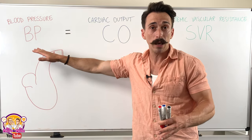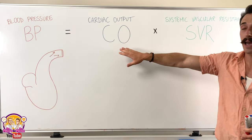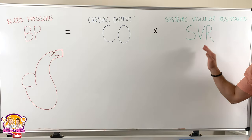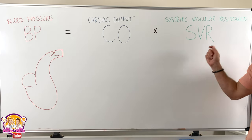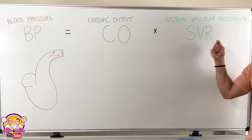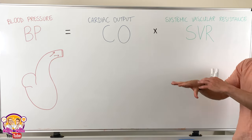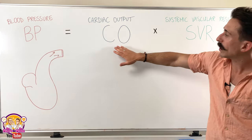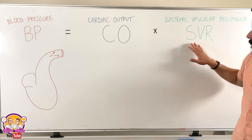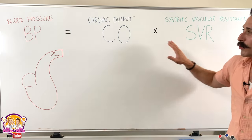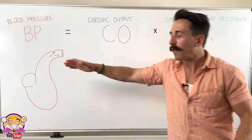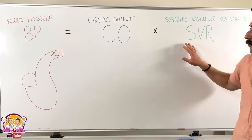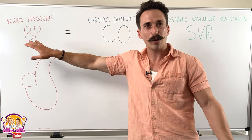Blood pressure, which is BP, equals cardiac output (CO) times systemic vascular resistance, also known as total peripheral resistance. It's a simple equation. If I were to increase any of these two values, you're going to increase blood pressure. If I decrease one or either of these two values, I'm going to decrease blood pressure.